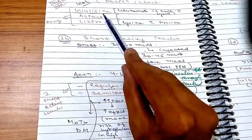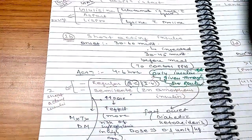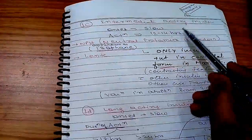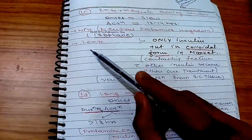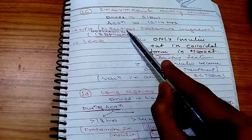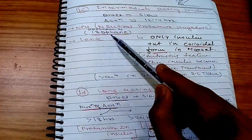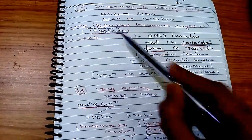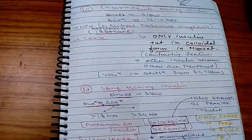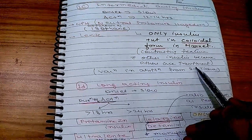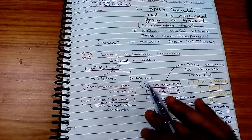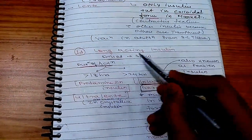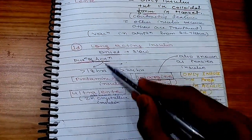The third group is intermediate acting insulin: slow onset, duration 4–12 to 14 hours. This includes NPH (Neutral Protamine Hagedorn), also known as isophane, and lente. NPH/isophane is the only insulin present in colloidal form in the market — a contrasting feature, as all other insulins are transparent.